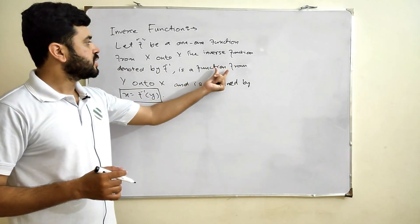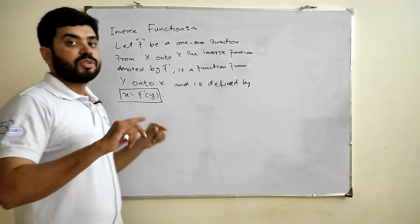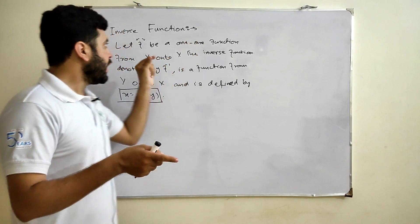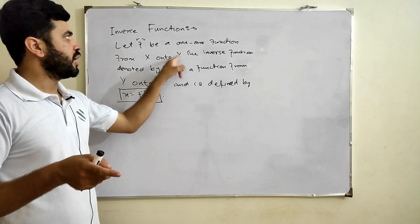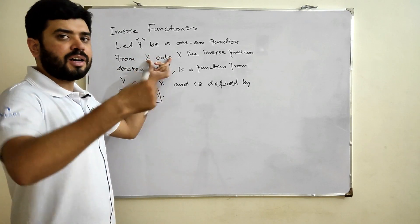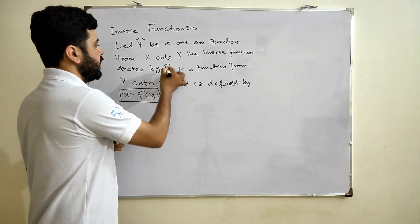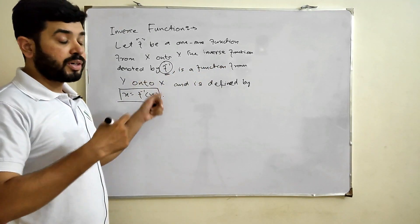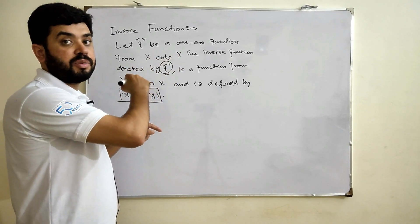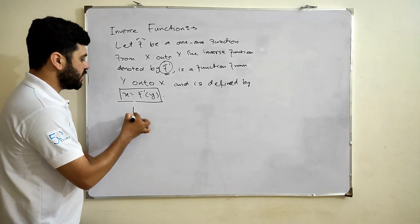So f inverse is a function from Y onto X, defined by x equals f inverse of y. There are two conditions: the function must be one-to-one, and it must also be onto. The inverse function, denoted f inverse, is defined by x equals f inverse of y. We will explain this with an example.